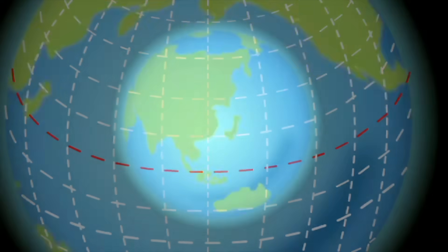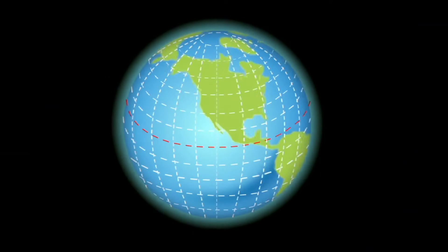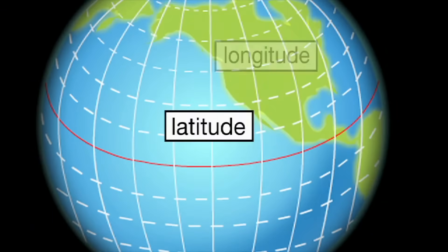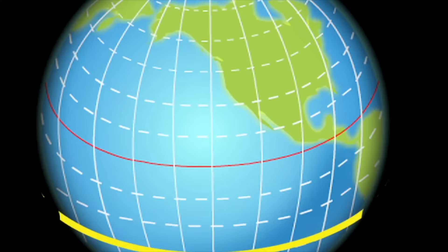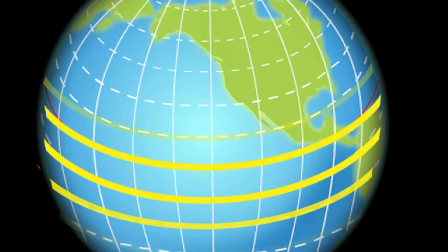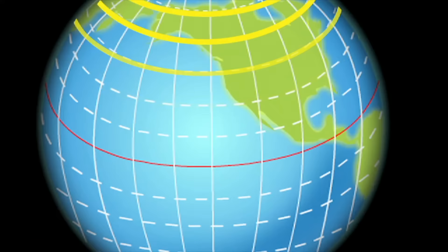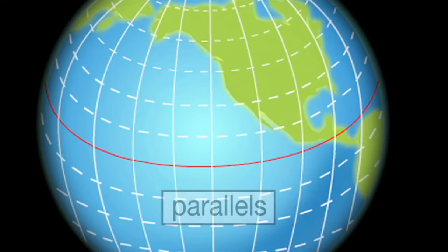The grids can be used to find places all over the world. The curved lines that form the grid on a globe are called lines of latitude and longitude. Lines of latitude go around the Earth. A helpful trick to remember this is that they look like rungs on a ladder — ladder and latitude sound similar, so it's easy to remember.